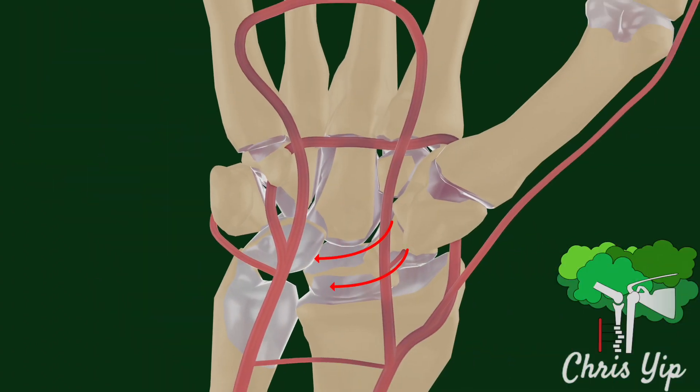This blood supply is described as retrograde, meaning that in the case of this fracture, the proximal fragment will not receive blood and will be at risk of osteonecrosis if not treated promptly.